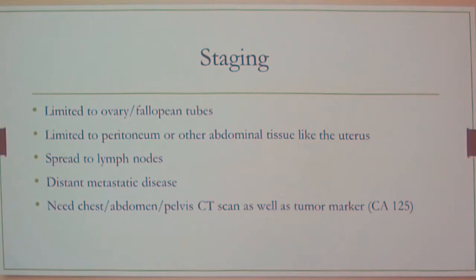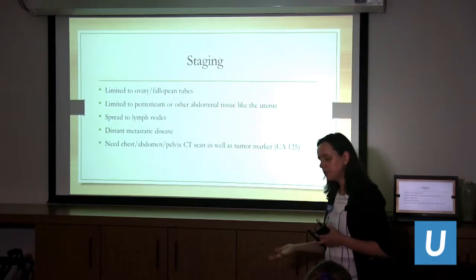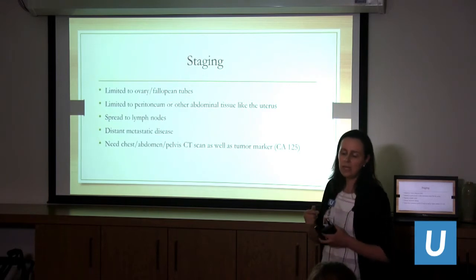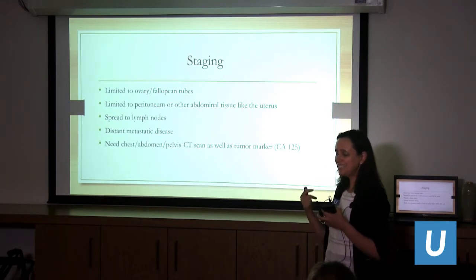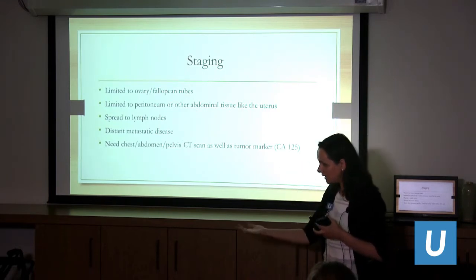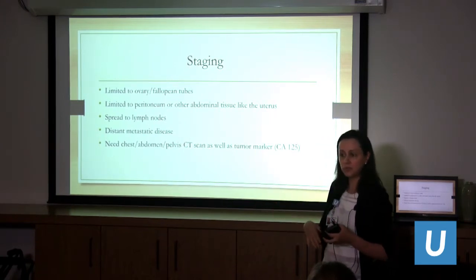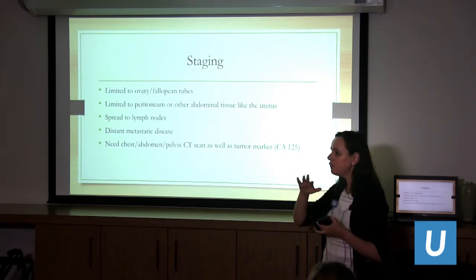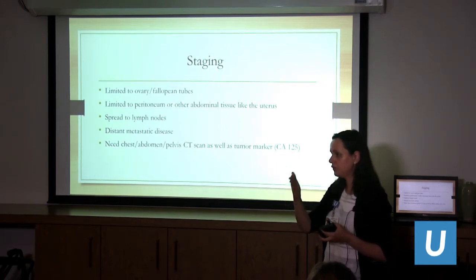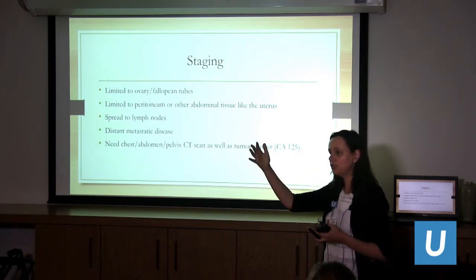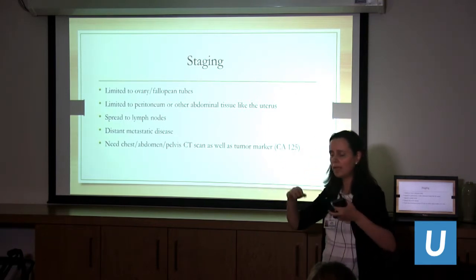There is also a tumor marker blood test called CA-125 — a protein excreted by most but not all ovarian cancers. It's not really used for diagnosis per se, because sometimes it doesn't go up when someone has ovarian cancer, and sometimes it's elevated when there is no ovarian cancer. But it is useful for monitoring: if we know someone has ovarian cancer, we note the level and track whether it comes down with surgery or therapy.